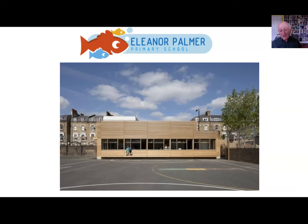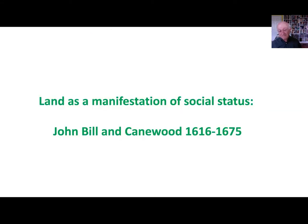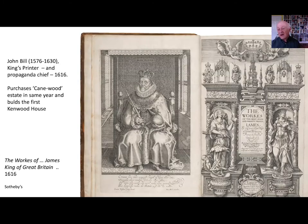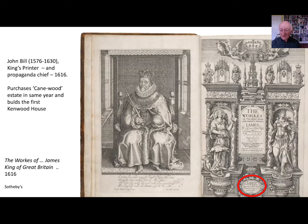And now we move from the world of Hilary Mantel to the world of Samuel Pepys, and to the land — not as a pledge, but as a manifestation of social status. It's quite well known that the King's Printer, John Bill, was the builder of the first Kenwood House. He purchased Kenwood in exactly the year when he was officially appointed King's Printer. And this is a book of the works of James I, published by him in 1616, the same year that he acquired Kenwood — a manifestation of how well he had done.